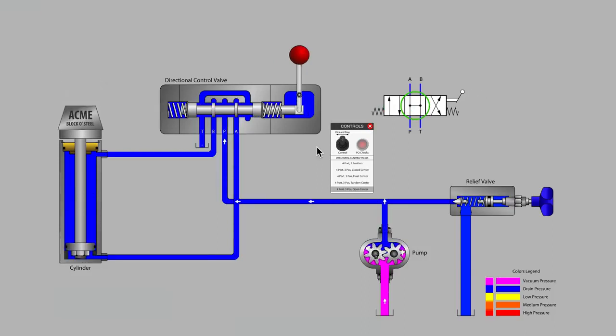both the open and tandem center valve unload the pump when returned to center. In so doing, a simple fixed displacement pump can be used without passing flow over the relief valve when the system is in neutral. Heating and energy draw is thus minimized.